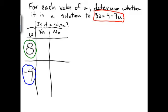So first, let's start off with 8. To check to see if this is a solution, I'm going to simply write down the equation that I had initially, 32 equals 4 minus 7.